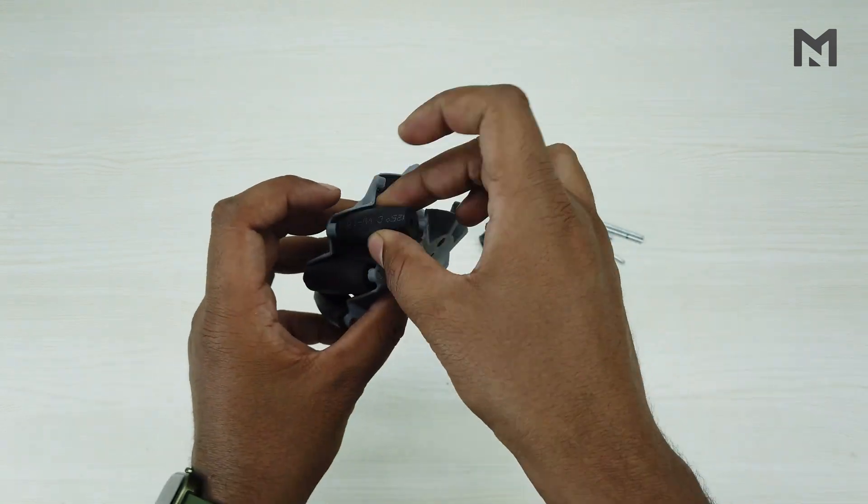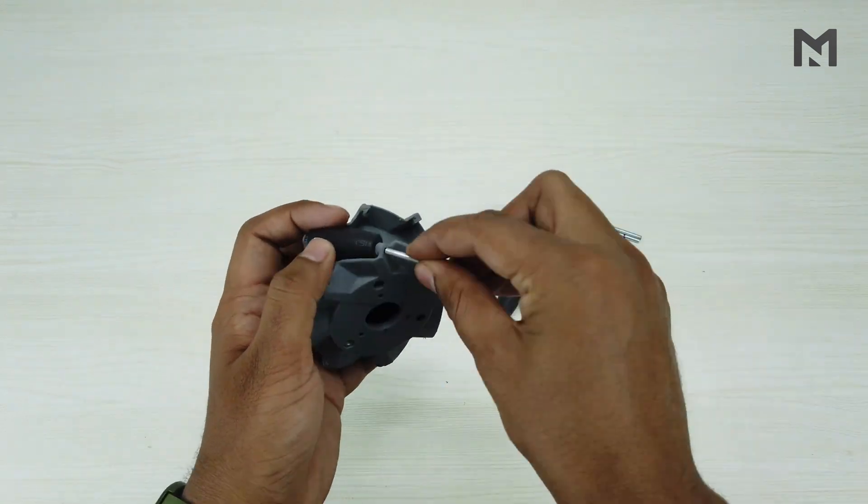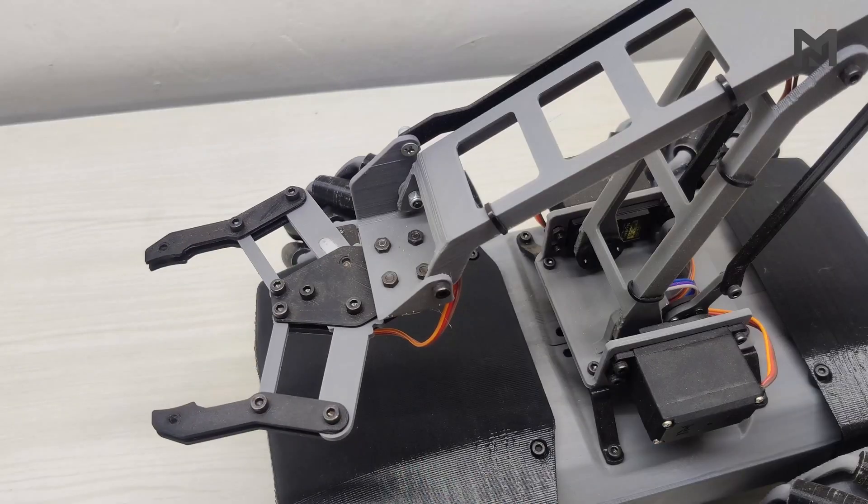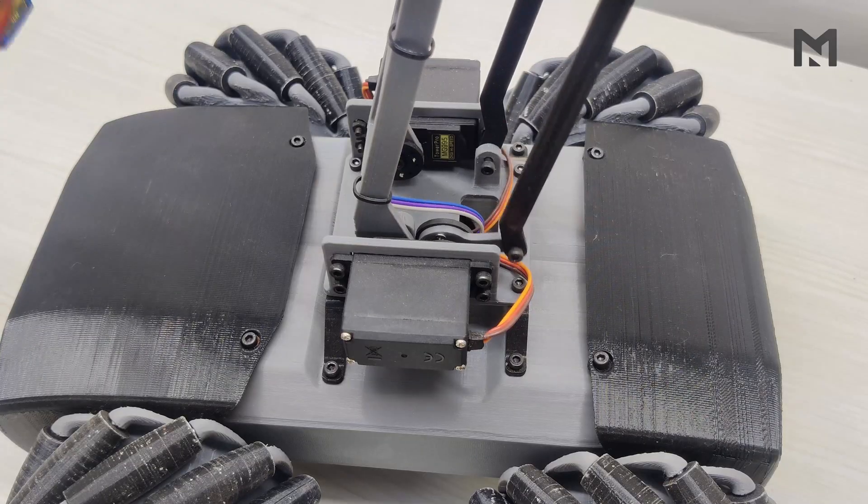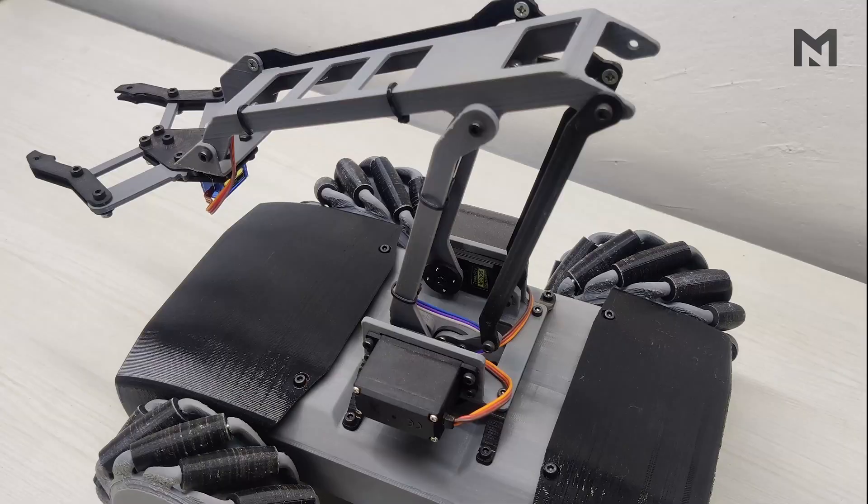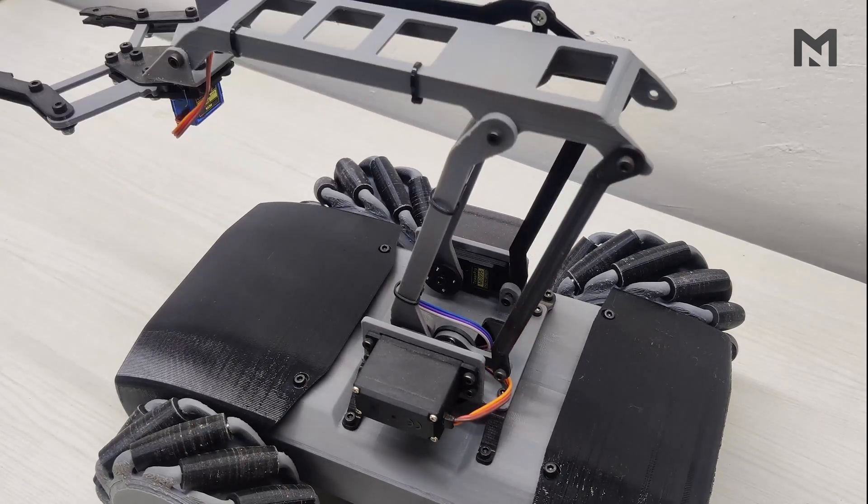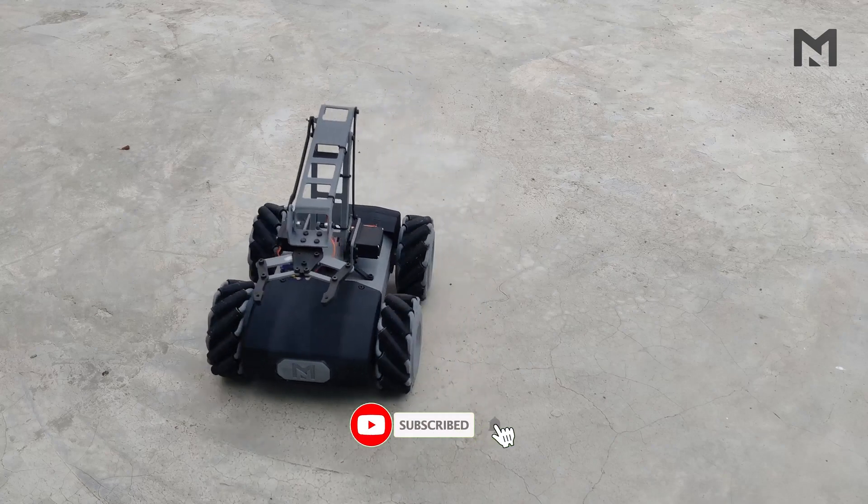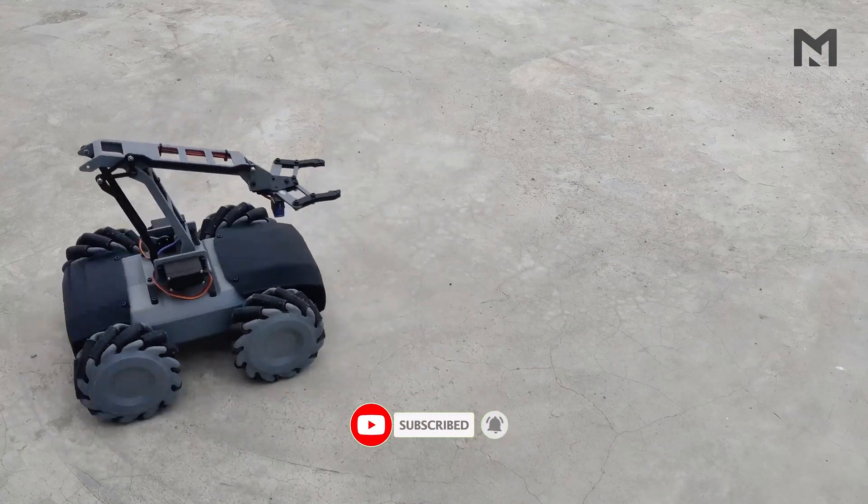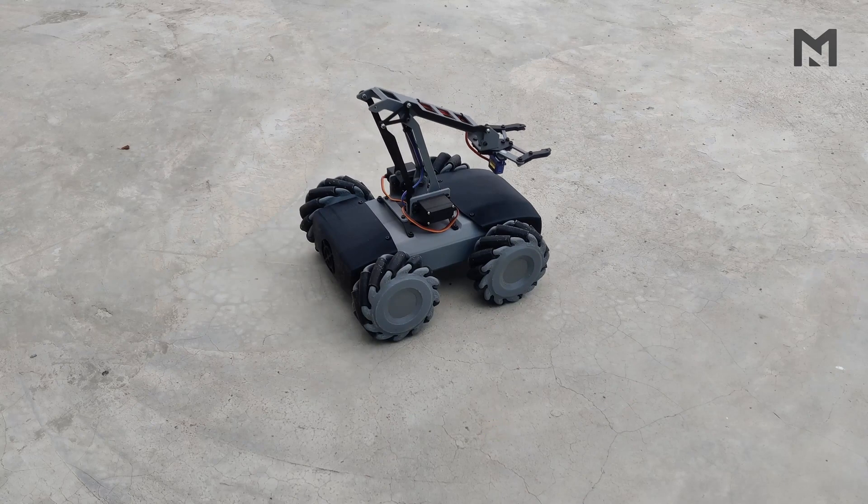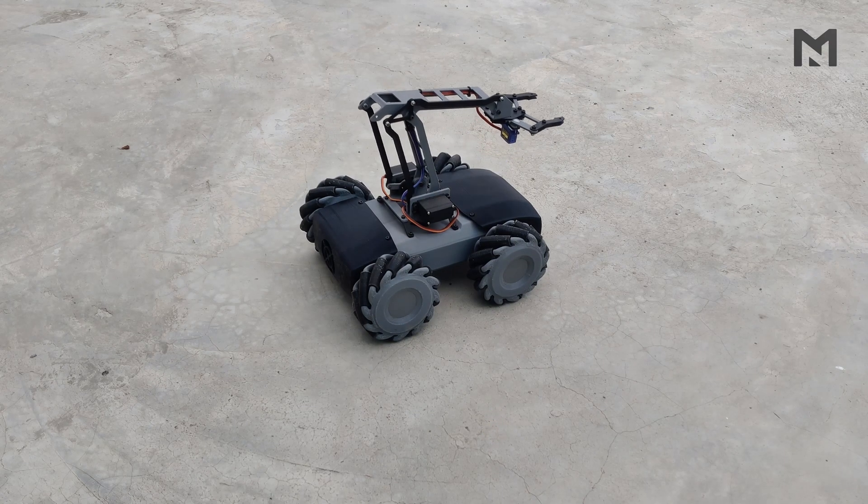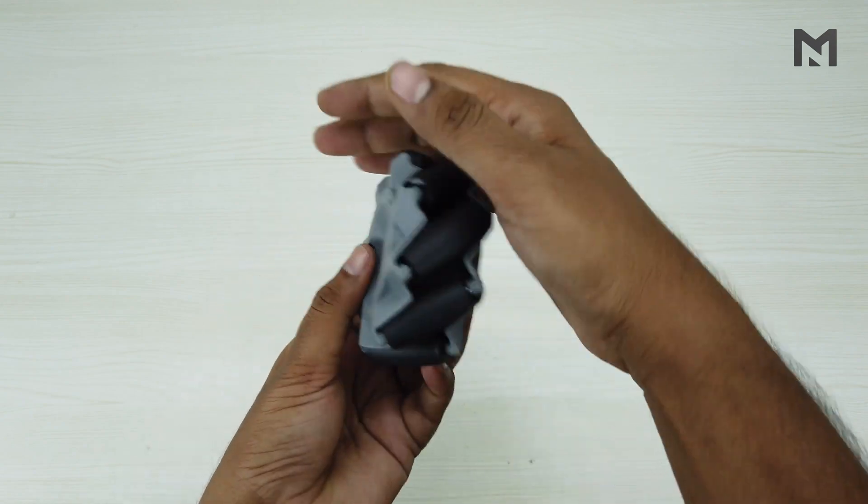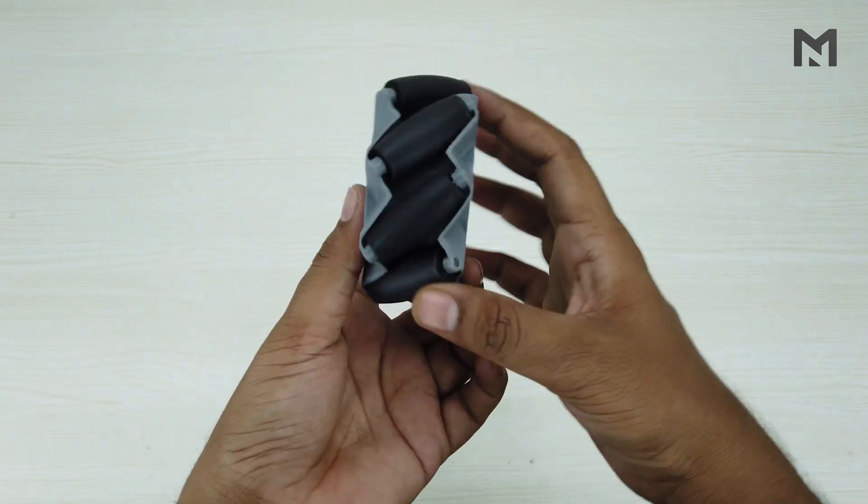The biggest advantage of mecanum wheel is sideward movement and diagonal movement. I'll show you how. This is my project. It's a full functional mechanical arm robot based on mecanum wheel. It is fitted with a set of 12 rollers with mecanum wheels and it performs sideward movement. You can watch its full video by clicking on the i button. I've assembled all the rollers and our mecanum wheel is ready. All its rollers are spinning quite smoothly.